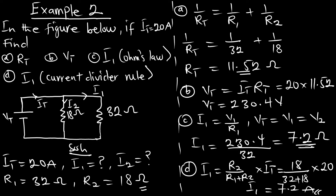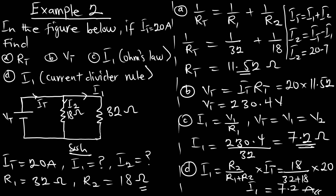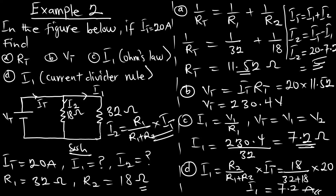Pay attention to the question - if it is restricting you to use the current divider rule, know how to go by it. With i1 equal to 7.2 amperes, what will i2 be? Since It equals i1 plus i2, i2 equals It minus i1, which is 20 minus 7.2, giving 12.8 amperes. You can also still use the current divider rule: i2 equals R1 on R1 plus R2, multiplying It. They will all give you the same solution.